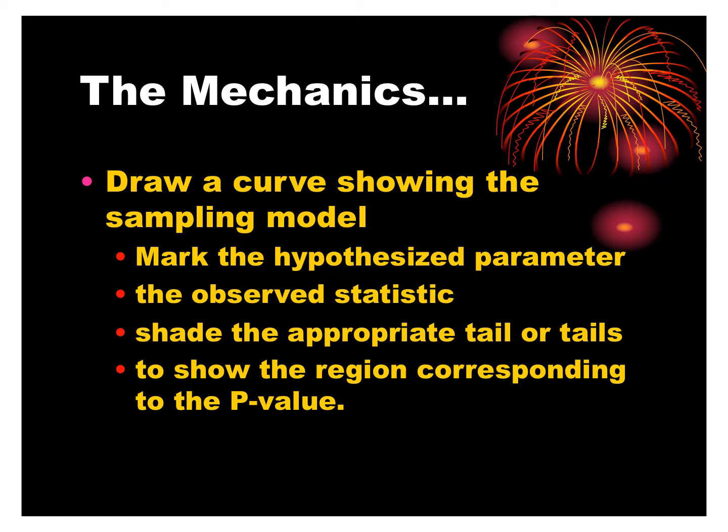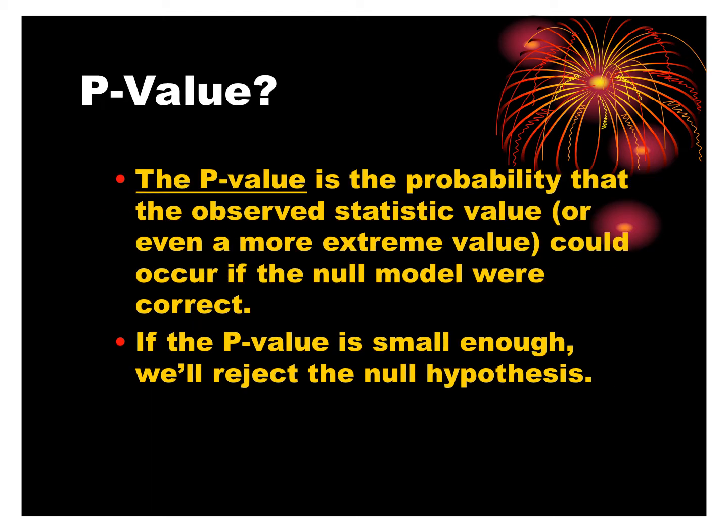We don't always have to draw the normal model unless the AP exam specifically asks for it. We're going to calculate what's called the p-value. The p-value is the probability we get from normalCDF — you have already calculated p-values, you just haven't applied them yet. We'll calculate a z-score and use normalCDF to find the probability.